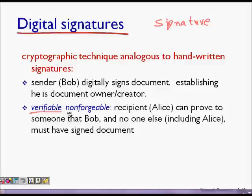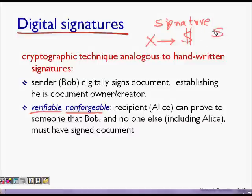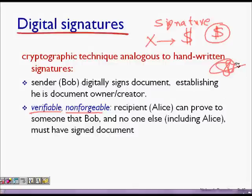A signature should also be non-forgeable, so no one can forge it. Let's say I am Mr. X and I sign something — this signature should be verifiable. If I go to a bank, it is like a password; they verify it is my sign. It should be non-forgeable so no other person can sign it, which is why we have such complicated signatures — they are verifiable and not easy to forge.